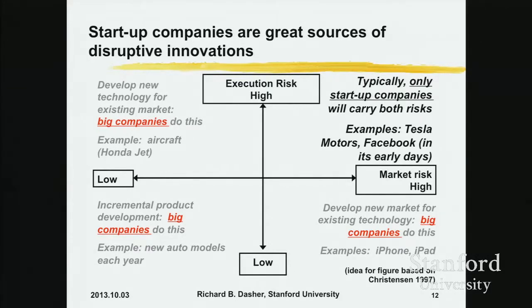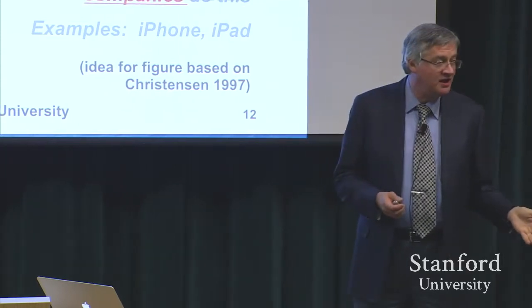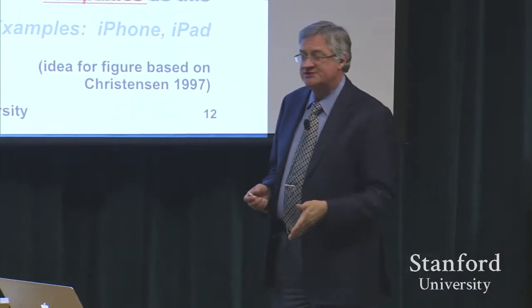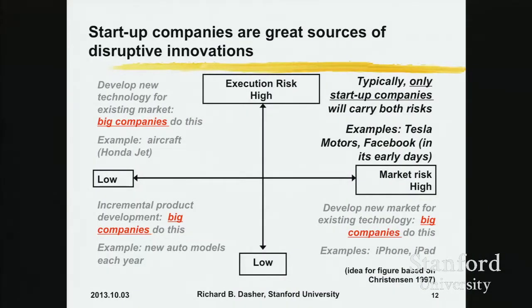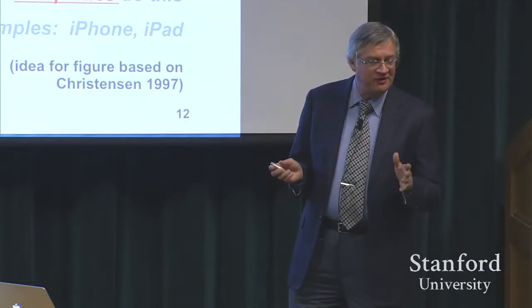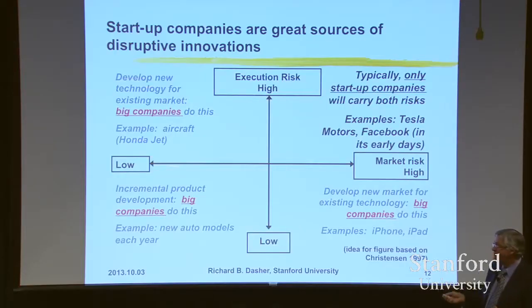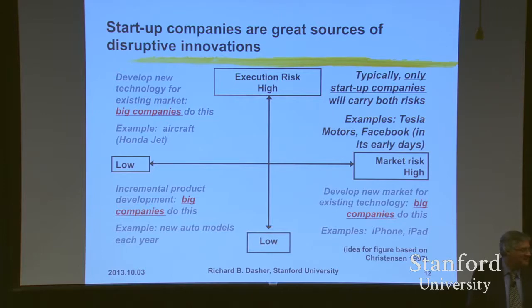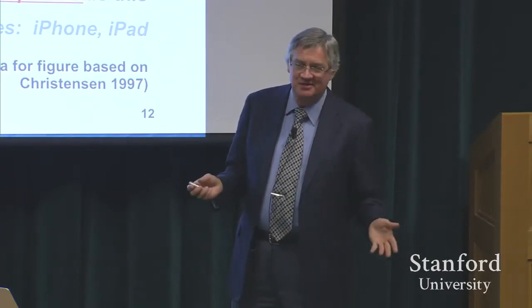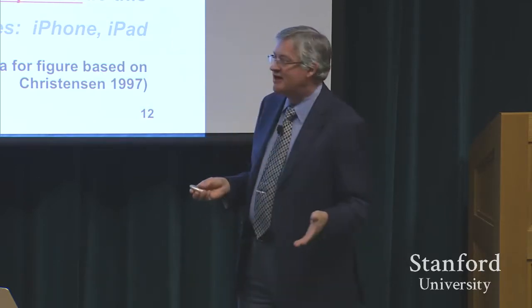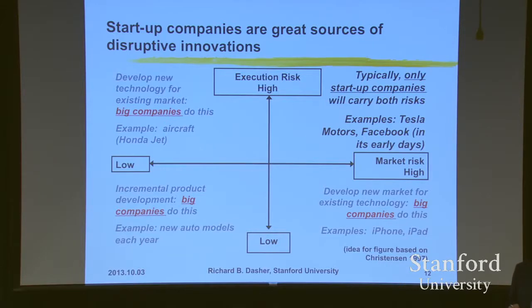There's another risk: even if you develop it, nobody's going to want to buy it — that's the market risk. If you are a big company, you can spend an awful lot of money developing a major new technology for an existing market, and companies do. So Honda Motor is delivering Honda Jet, a small business jet for about six people with all kinds of new performance characteristics. The business jet market is relatively well known — they were able to predict how many airports they could get into, and justify putting dozens of years of work and hundreds of people onto the project.